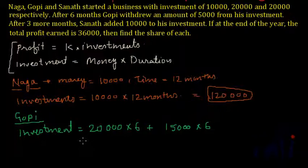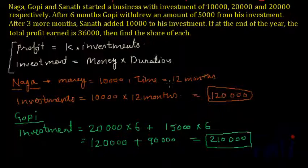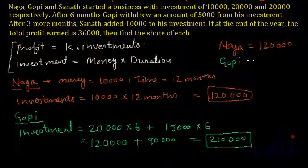So the total investments done by Gopi will be 20,000 multiplied by 6, plus 15,000 multiplied by 6. That gives 120,000 plus 90,000, so his total investments are equal to 210,000. Let me note down: total investment by Naga is 120,000, and total investment by Gopi is 210,000.